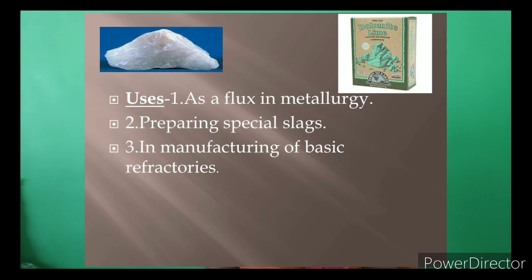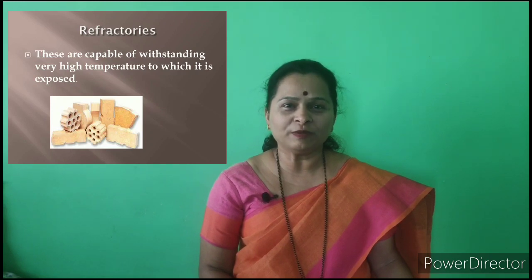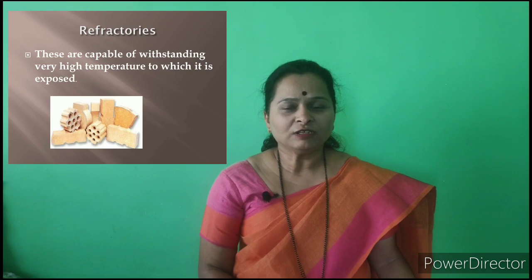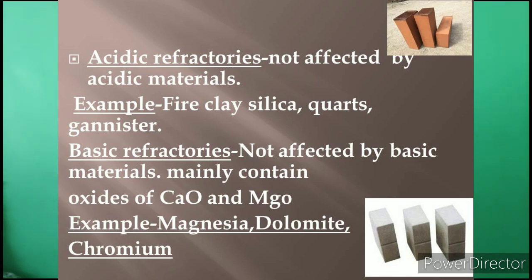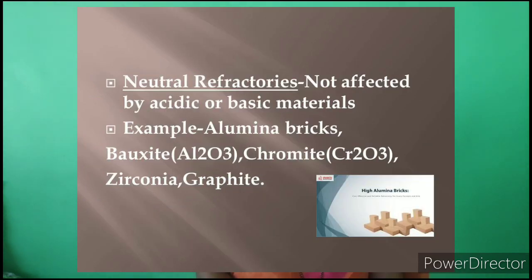Refractories are materials that withstand high temperatures above 1000°C. There are three types based on chemical behavior: acidic refractories (not affected by acidic materials, e.g., fire clay, silica, quartz), basic refractories (not affected by basic materials, contain CaO and MgO, e.g., dolomite and chromium), and neutral refractories (not affected by acidic or basic materials, e.g., alumina bricks, bauxite, chromite, zirconia, and graphite).